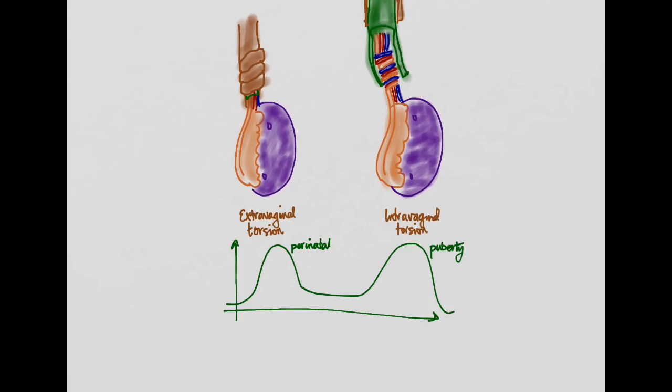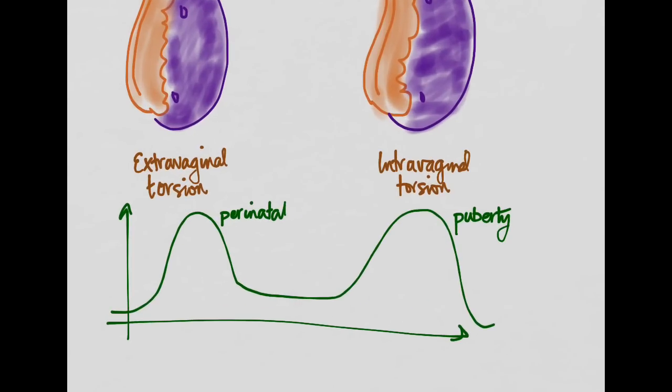So there are two peaks when this happens, the peak incidence. There's a perinatal period, which means immediately before birth and immediately after birth, you're going to get extravaginal torsion. Usually these kids are going to come out with a dead testicle because there's nothing you could have done because they may have torsed while they were in utero, and so that testicle usually just has to be removed.